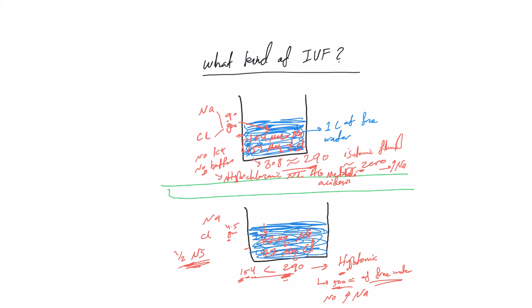Because this is a hypotonic solution, remember the rule we said: the more hypotonic solution, the less it stays in the extracellular space. So half normal saline has a higher tendency to go intracellularly.